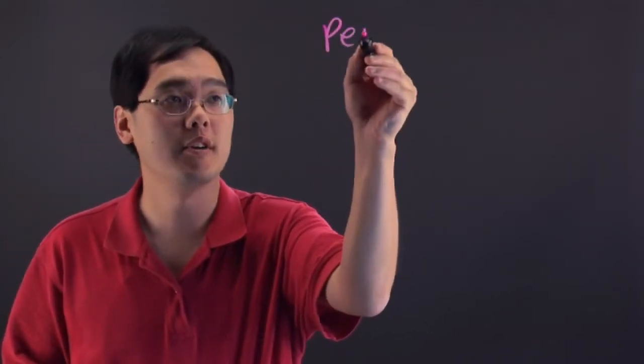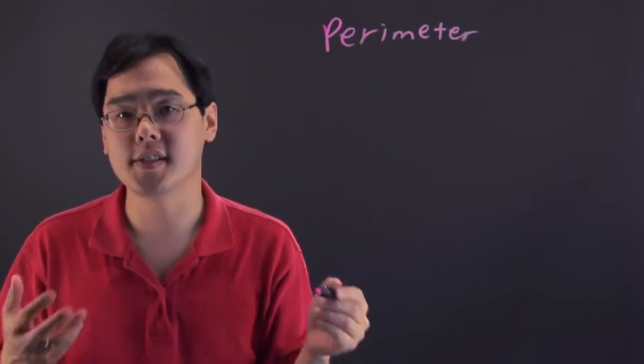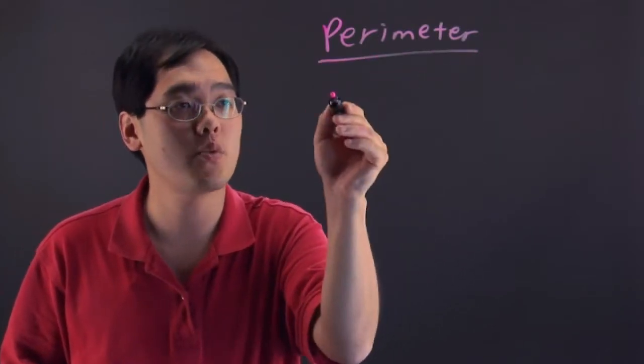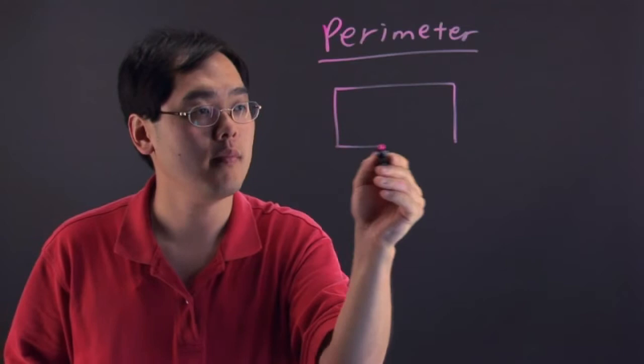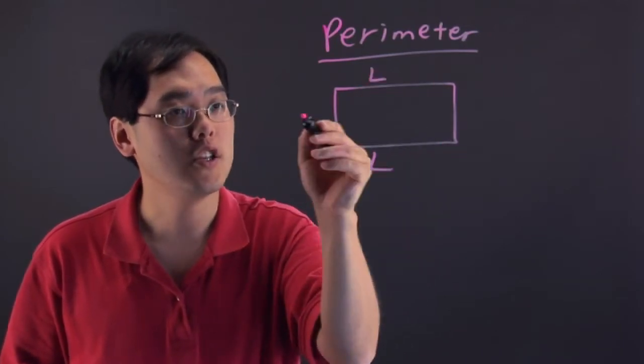So when it comes to finding perimeter, we're talking about finding the distance around a two-dimensional shape. I'll just use a rectangle as an illustration and as you know, with a rectangle, it has two lengths and two widths.